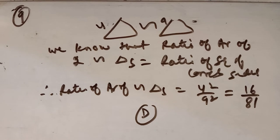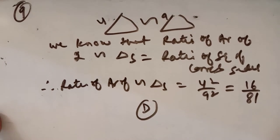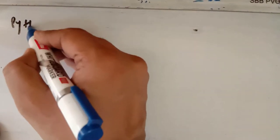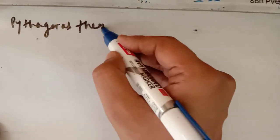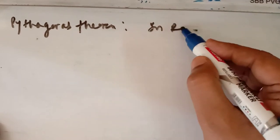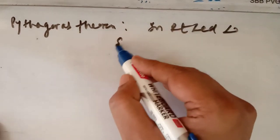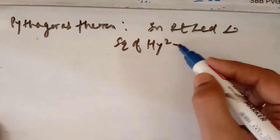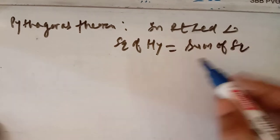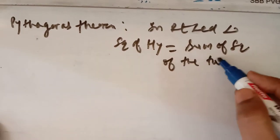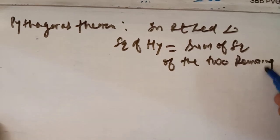After that, you have to study two important theorems: the Pythagoras theorem and the converse of the Pythagoras theorem, which will be used in the next exercise, that is 6.5. The Pythagoras theorem states that in a right-angled triangle, the square of the hypotenuse is equal to the sum of the squares of the two remaining sides.